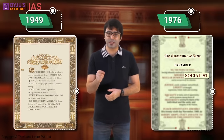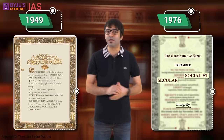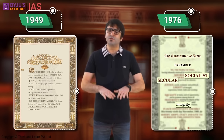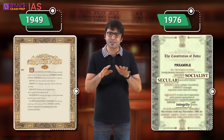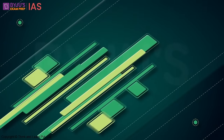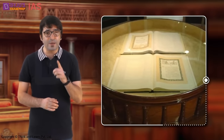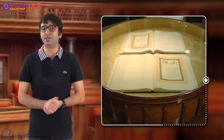In 1976, the words 'socialist,' 'secular,' and 'integrity' were added to the preamble through the 42nd Amendment Act, 1976. All these events played a part in the formation of the preamble. As of today, the original copies of the constitution are kept in helium-filled cases in the library of the Indian Parliament.